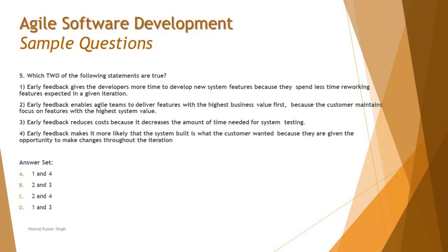Statement two: 'early feedback enables agile teams to deliver features with the highest business value first because customers maintain focus on features with the highest system value.' We discussed in Chapter 1 that customer satisfaction through delivering the highest value first is the priority. In agile ceremonies like backlog grooming, we reprioritize the backlog every week to pick up the highest priority item in the next sprint. Statement two is valid.